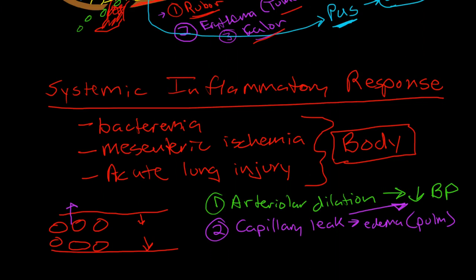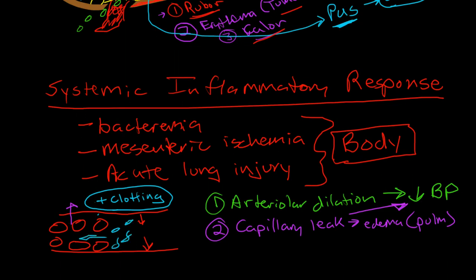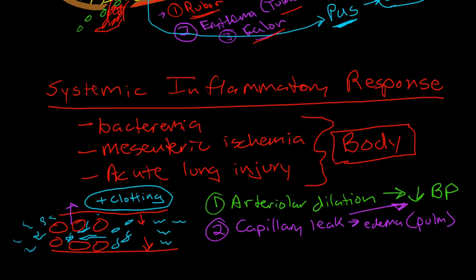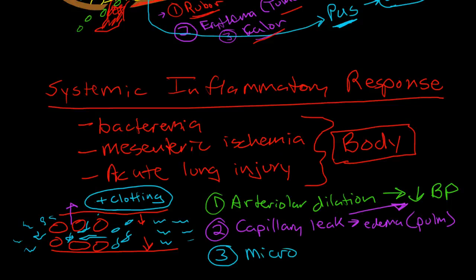The third major problem that occurs is activation of the clotting cascade throughout the entire body, and this is really problematic because we end up clotting all over the place. Clotting works through a positive feedback mechanism and is regulated by various factors, but when we have massive clotting throughout the body we end up overwhelming our regulatory mechanisms. We have uncontrolled clotting throughout the body and end up with microemboli.